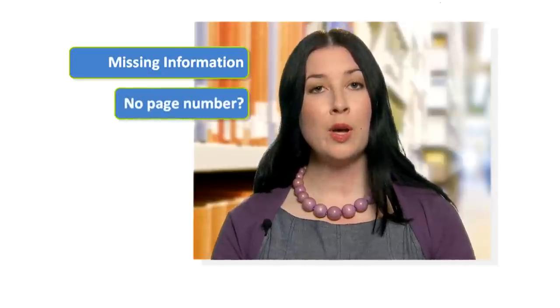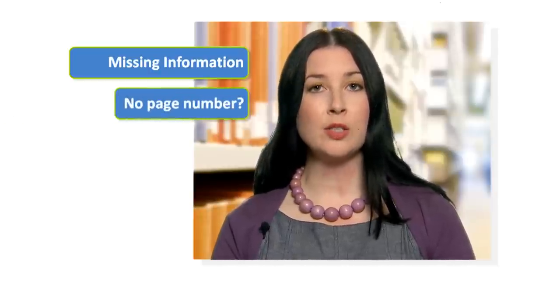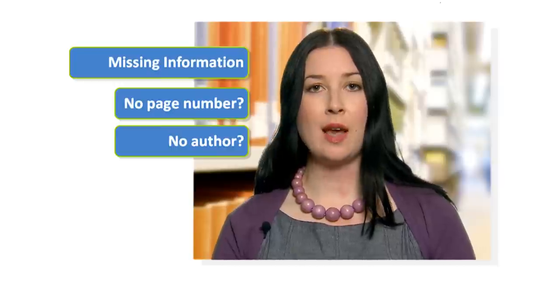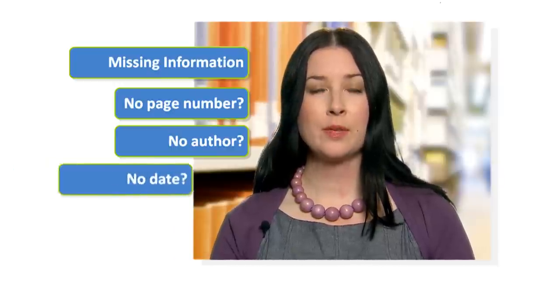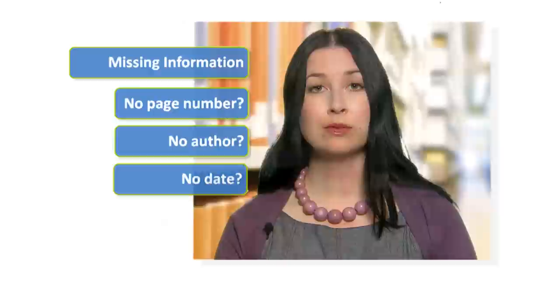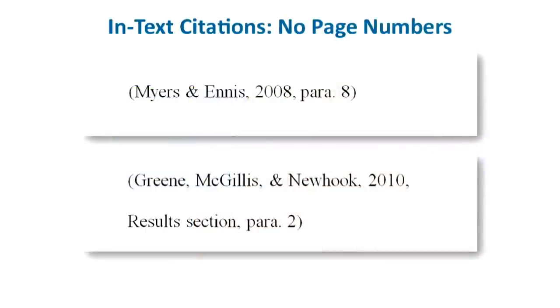Sometimes you might not be able to find all the required information. For example, what if you have an online source that has no page numbers? Or the author's name is not listed? Or what if you are unable to determine the publication date? For direct quotes where there are no page numbers, use a paragraph number or cite the heading if there are any and the number of paragraphs following it.